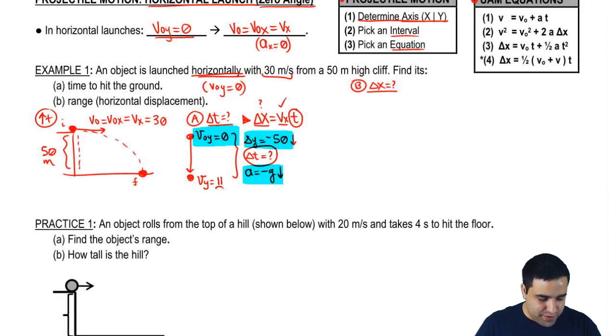V final is my ignore variable. Put a sad face there. And to find delta x, I just have to pick one of the equations. And I'm going to use the equation that doesn't have v final, which in this case, the third equation here will do. So equation number 3.